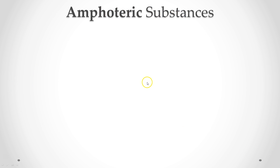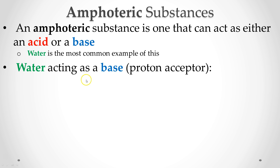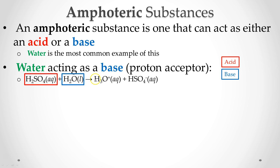Now we have what's called an amphoteric substance — one that can either act as an acid or a base depending upon the circumstances. Water is the one you'll most commonly see. Here we have water acting as a base, meaning it is a proton acceptor. Sulfuric acid plus water leads to the hydronium cation plus the anion after sulfuric acid has donated a proton. Water is acting as a base here — a proton acceptor — becoming the hydronium cation.